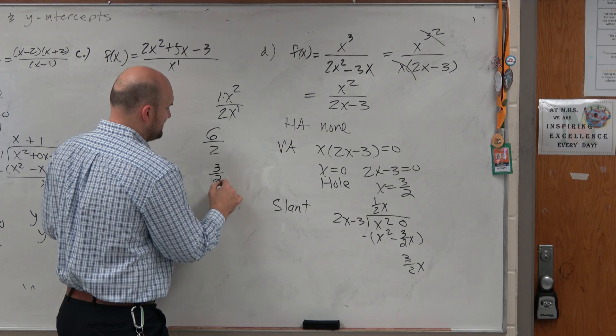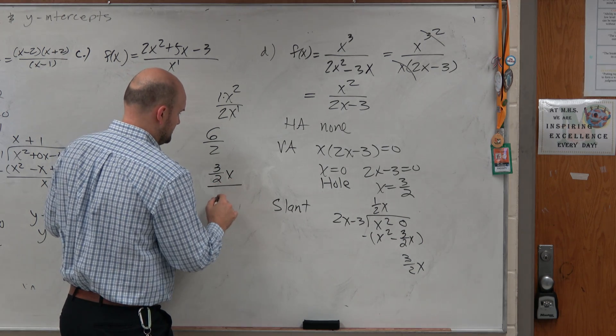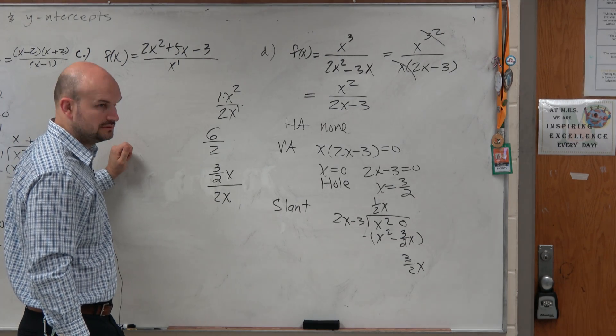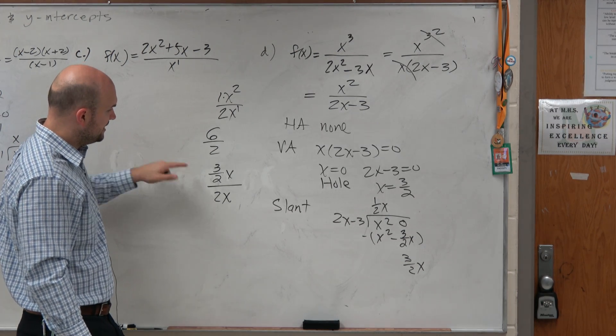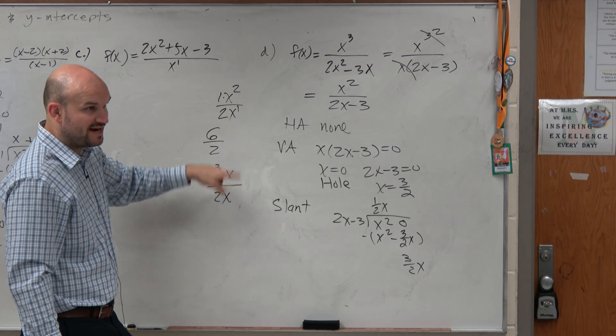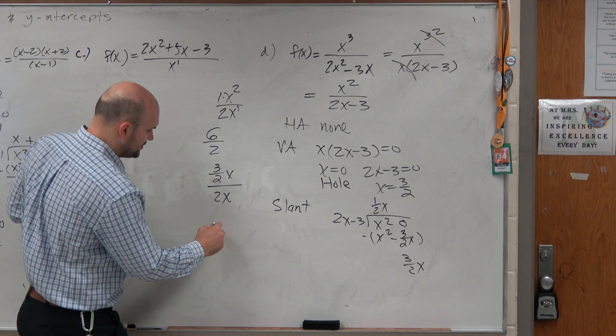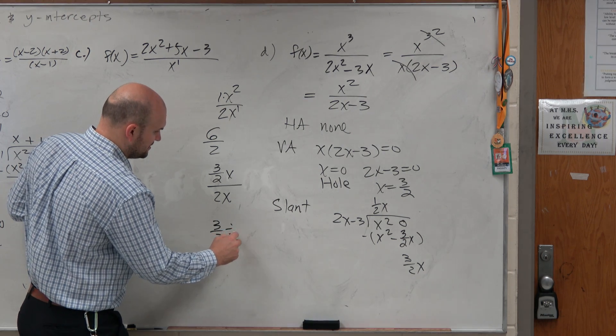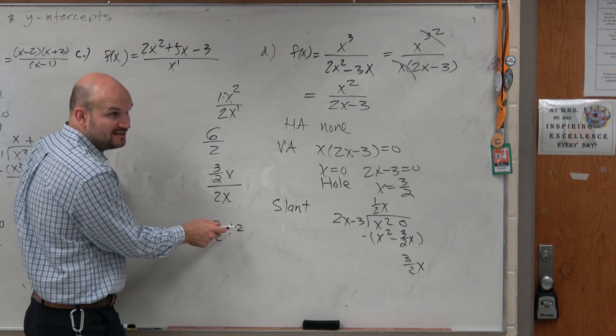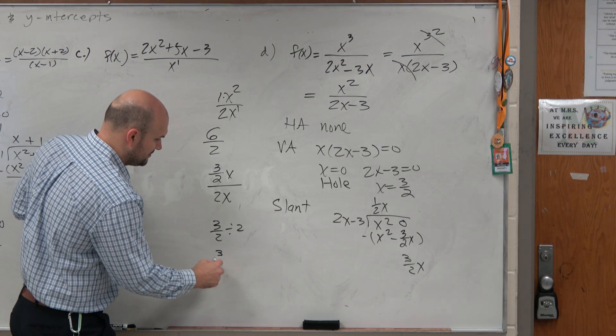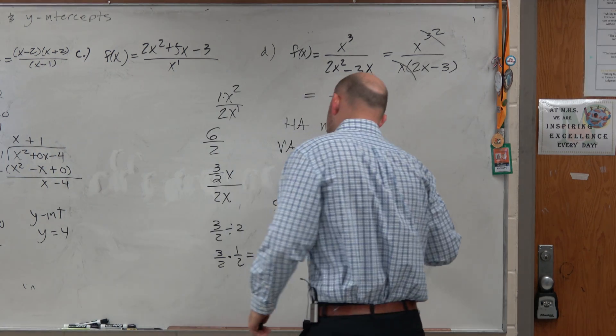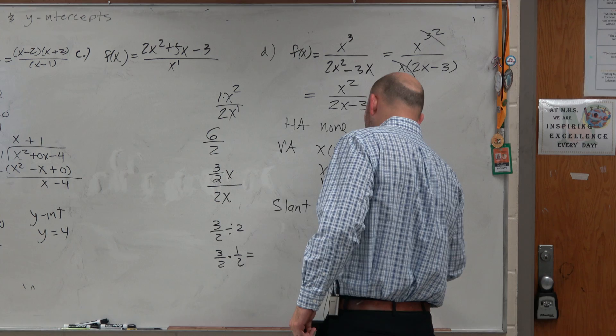Now, we do 3 halves x divided by 2x. Well, we're just dividing fractions, right? Do you guys remember dividing fractions? The x's divide out. So you think about this. You're really doing 3 halves divided by 2. 3 halves divided by a number is the same thing as multiplying by the reciprocal, which is equal to a 3 fourths.